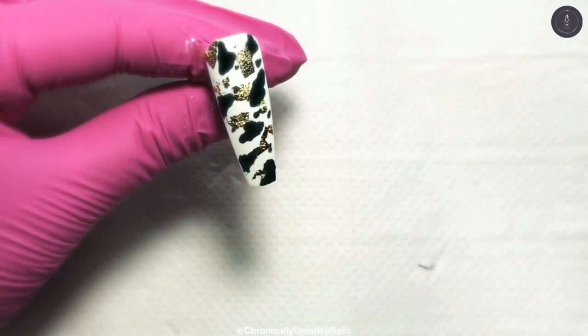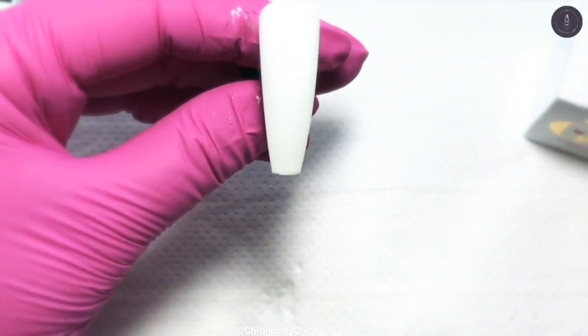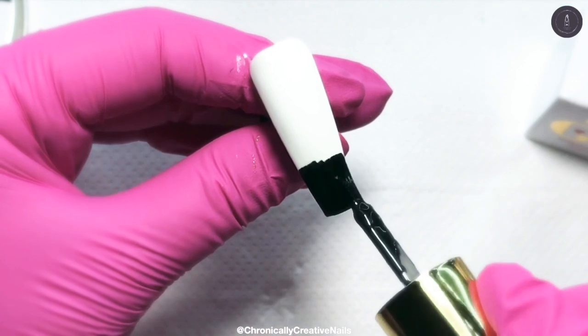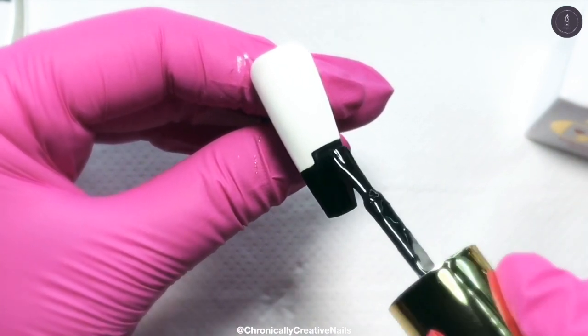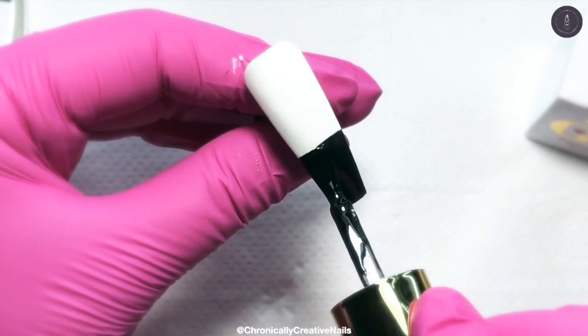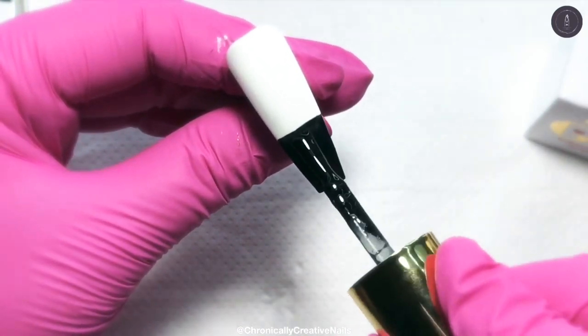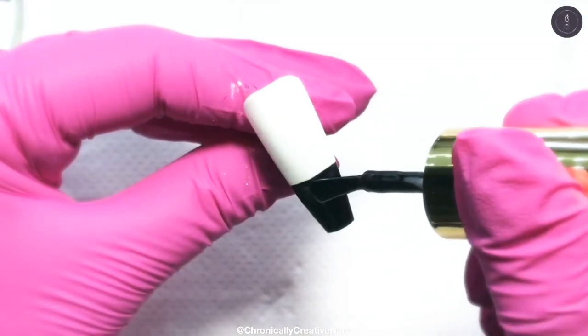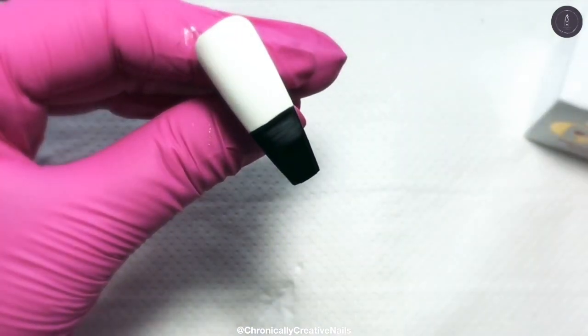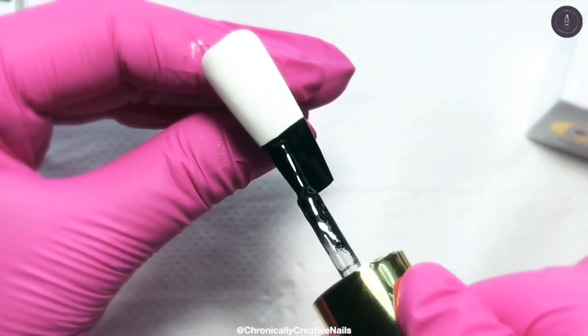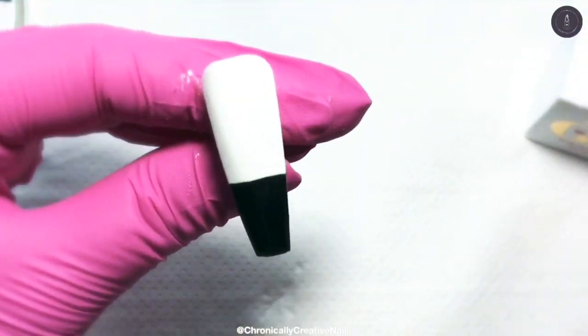There we go. Once you're happy with that design I'm then going to paint the bottom, I would say bottom third of this nail black, do two coats of that. Your line doesn't have to be absolutely perfect because we're going to use the gold embossing gel over that anyway.